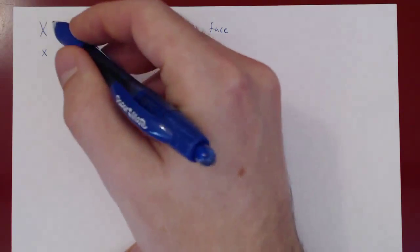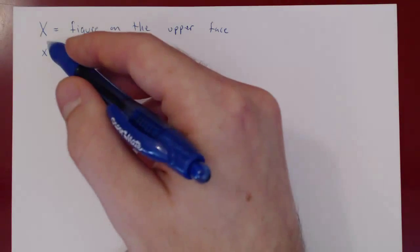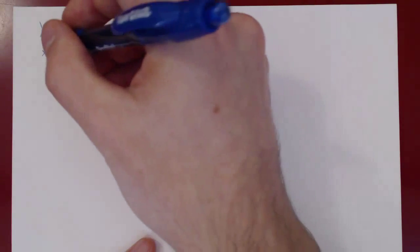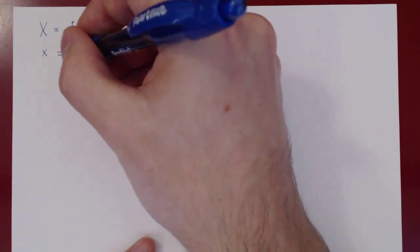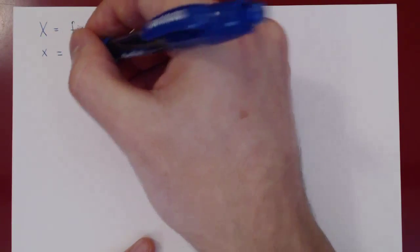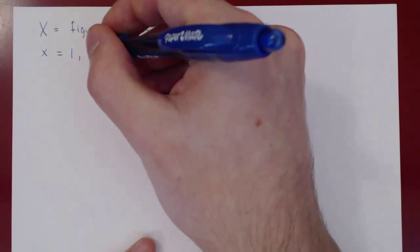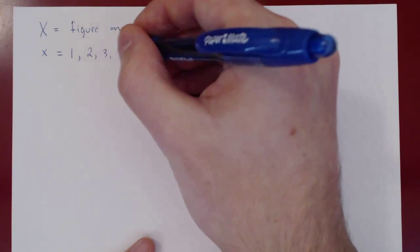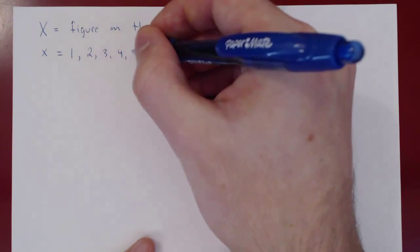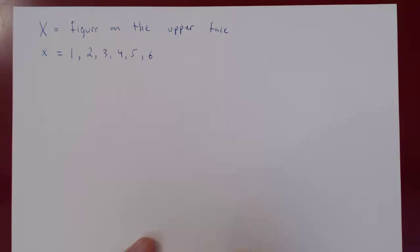Always use an uppercase X for a random variable, and a lowercase x for the actual values. Here x can be equal to one, two, three, four, five, or six.